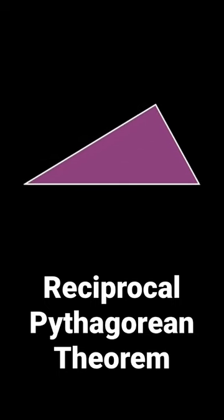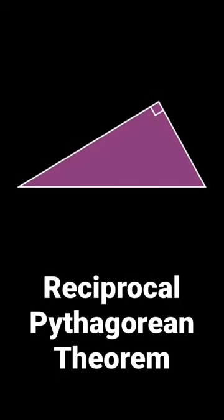Here's a surprising fact about right triangles you might not have seen before. Imagine you have a right triangle with sides of length A and B and a hypotenuse of length C.